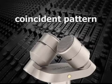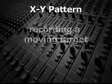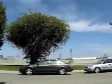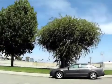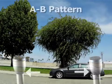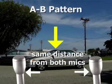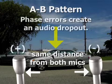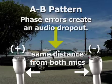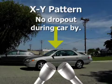Besides being more mono-compatible, the other big advantage of an XY arrangement is when recording a moving target — for example, a car passing by. When recording this type of event using two mono mics set some distance apart, there's a point when the car is equidistant between the two mics. At that point, there's an audio dropout due to phase cancellation. However, this dropout doesn't occur when the mics are arranged in an XY pattern.